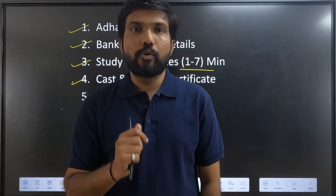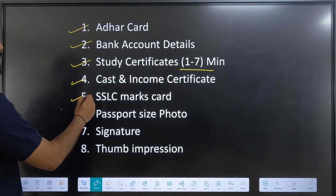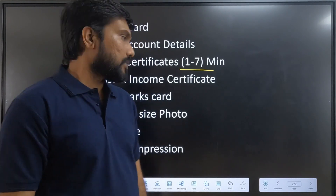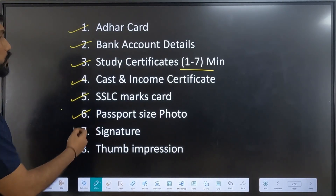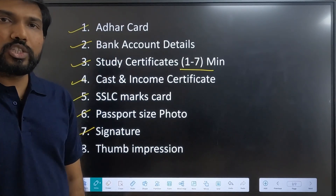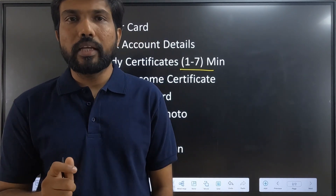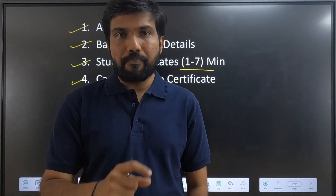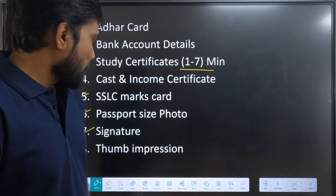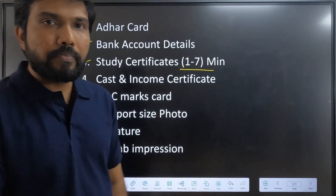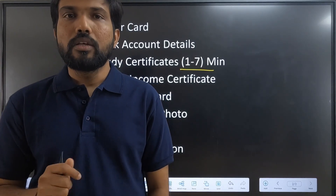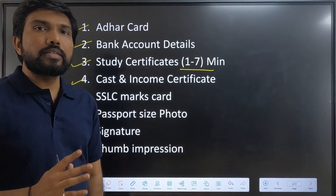The next document is the SSLC marks card — you all have that. Submit your SSLC marks card along with a passport-size photo. Also prepare your signature — scan it and keep the file ready in the specified size of 5 MB. You also need to take a thumb impression, scan it, and keep it ready to upload as well.